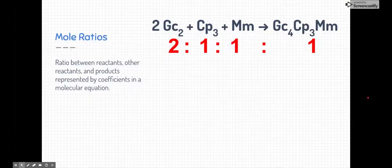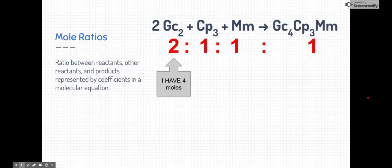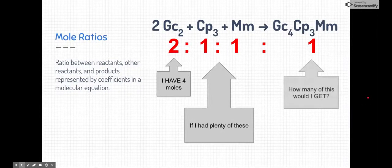First, we need to know what a mole ratio is. A mole ratio is the ratio between reactants and other reactants or products. We know what the mole ratios are because we use the coefficients in a molecular equation. Up here is our molecular equation again. If you look at the front numbers, it's two to one to one to one. Those are the ratios between the reactants, other reactants, or the ratios between the reactants and the products. They help us answer questions like, what if I had four moles of graham crackers and I had plenty of all the other materials? How many s'mores would I get?